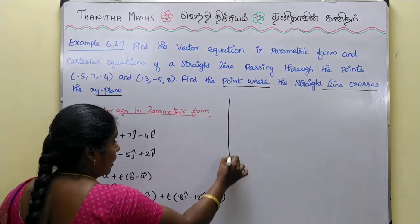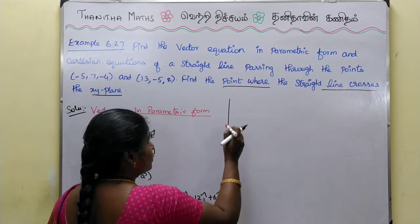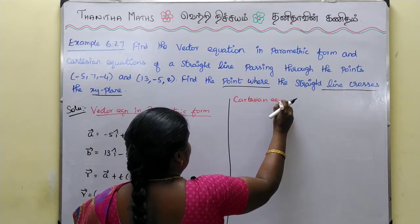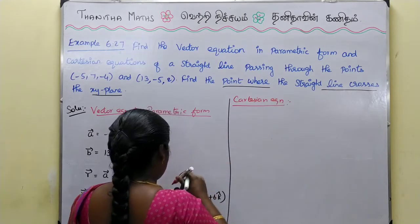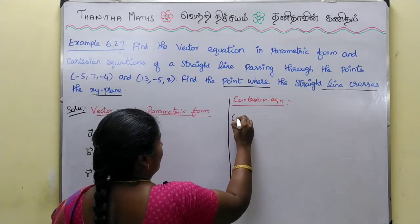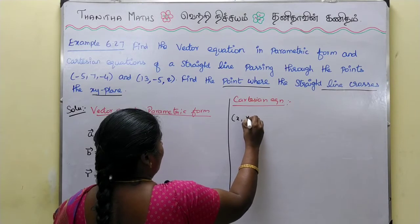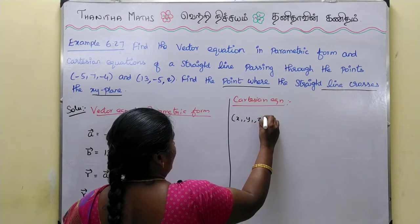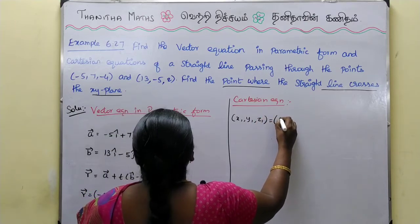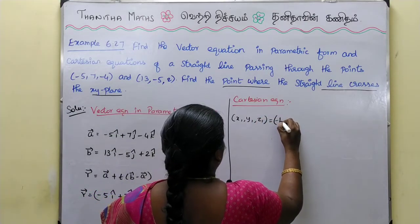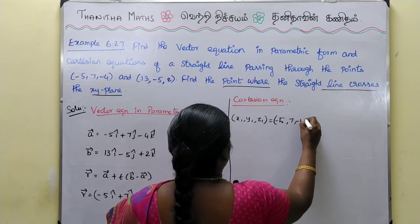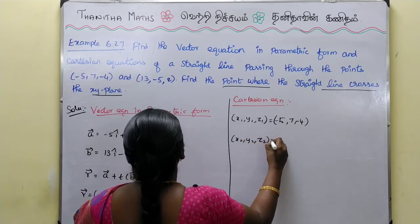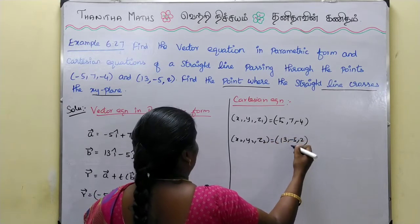And now we can write the Cartesian equation. The point x1, y1, z1 is minus 5, 7, minus 4. And x2, y2, z2 is equal to 13, minus 5, 2.